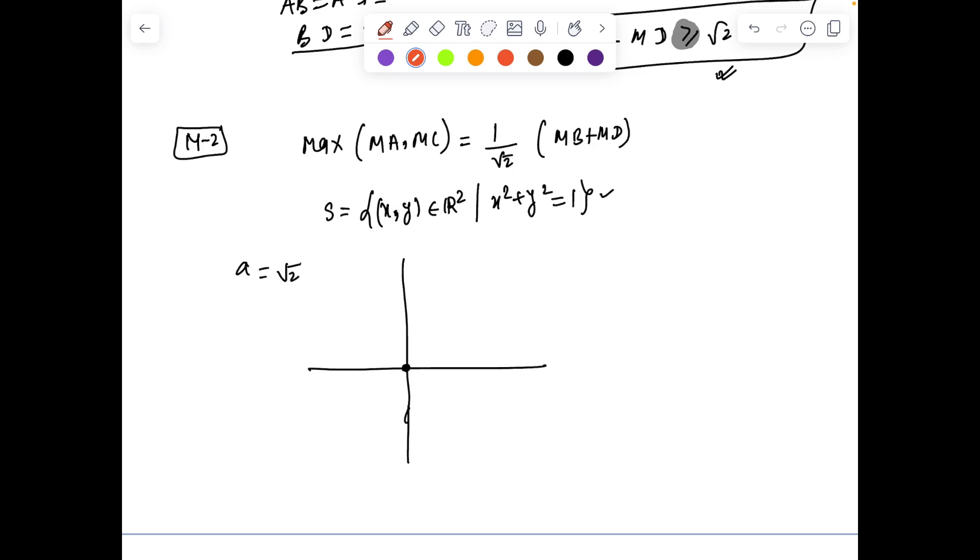Without any loss of generality I can assume the side length to be √2, O is the origin, and the center of the square I am taking at origin (0, 0). Hence the points on the square are at (-1, 0), (1, 0), (0, 1) and (0, -1). This can always be done by rotating, translating and re-scaling.